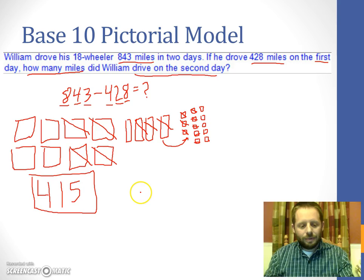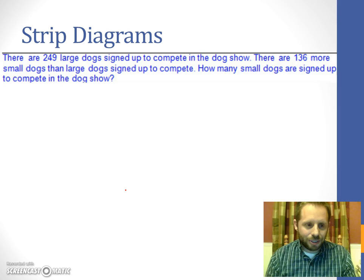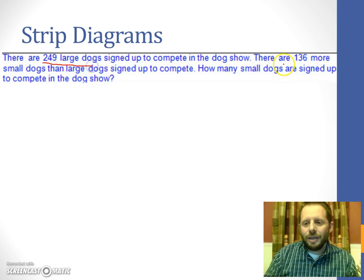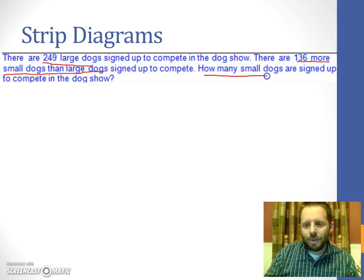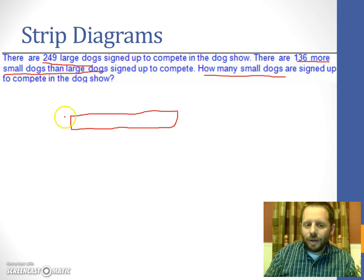The next model we're using, this is just a pictorial representation of the problem. This is not really a strategy for doing addition or subtraction. But it is a great way to illustrate the problem to help you devise a plan for what to do. So same problem we saw earlier, we got 249 large dogs, 136 more small dogs than large dogs. And the question is how many small dogs are signed up. Let's look at this as two parts that make a whole. So the entire strip represents the number of small dogs.